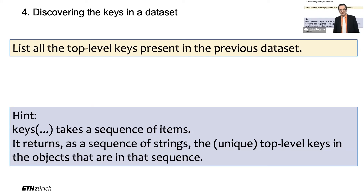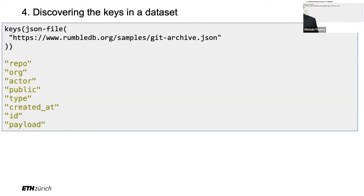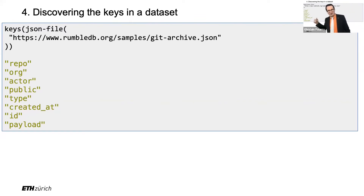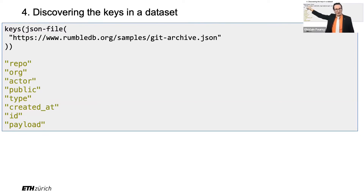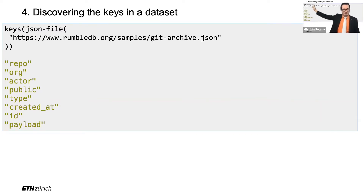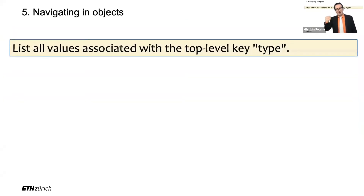Here it is — `keys(json-file(...))` — and you see there are just eight top-level keys in the dataset. If you prefer the XQuery 3.1 arrow notation, `json-file(...) => keys()` should also work. Now let's look at the values associated with the top-level key `type`. Object navigation uses the dot operator — just like in Python, JavaScript, and Java. The dot works on sequences of items, just like the slash in XPath, navigating through the whole sequence.